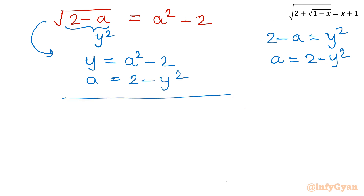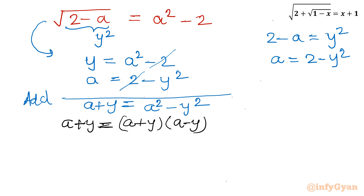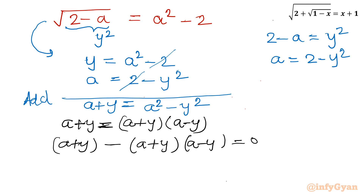Now add both equations: y plus a equals a squared minus 2, and a equals 2 minus y squared. Adding them, these two constant terms cancel, so we get y plus a equals a squared minus y squared. Applying the difference of two squares formula: a plus y equals (a plus y)(a minus y). Taking all terms to one side: (a plus y) minus (a plus y)(a minus y) equals 0. Factoring out (a plus y): (a plus y)(1 minus (a minus y)) equals 0.